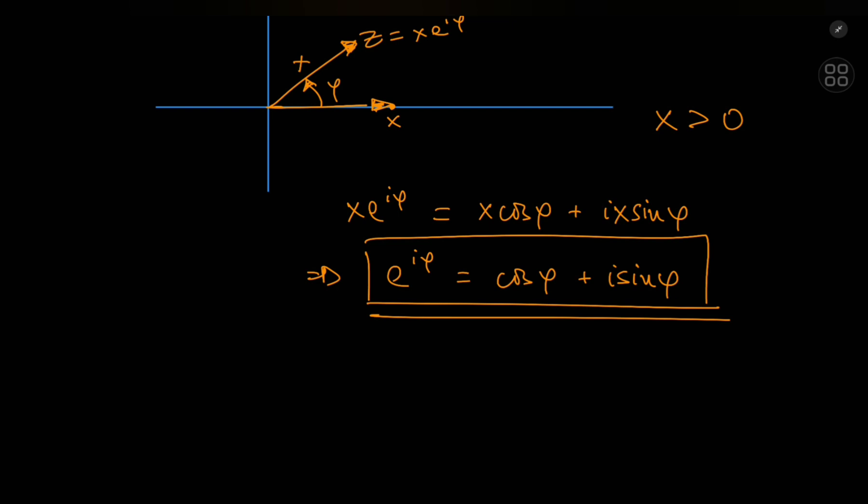And what if I considered the case for e to the negative i phi? This of course would be e to the i times negative phi. So that should be the cosine of negative phi plus i times the sine of negative phi.